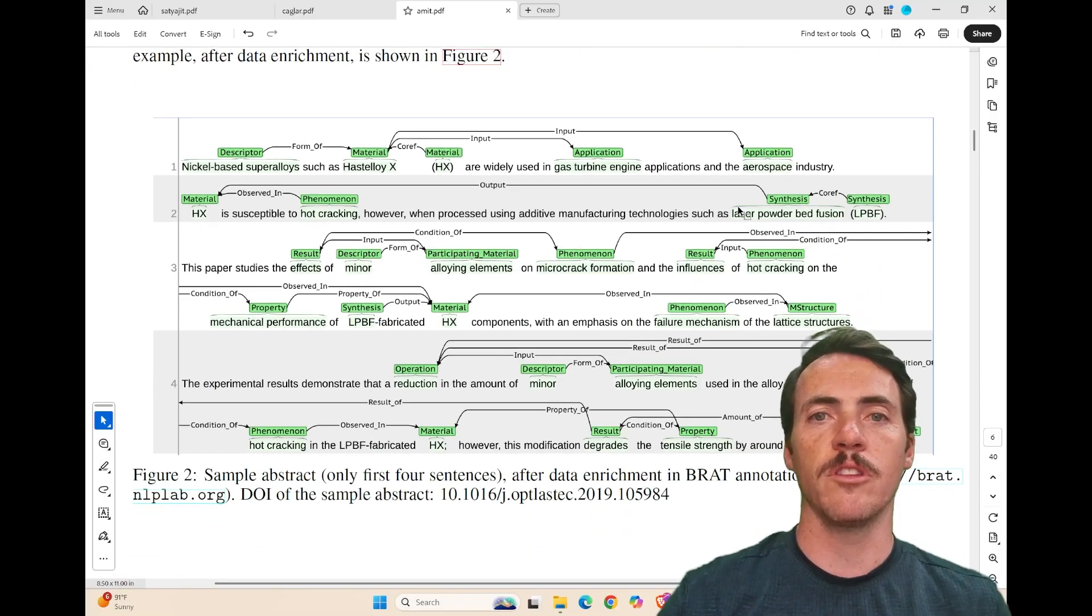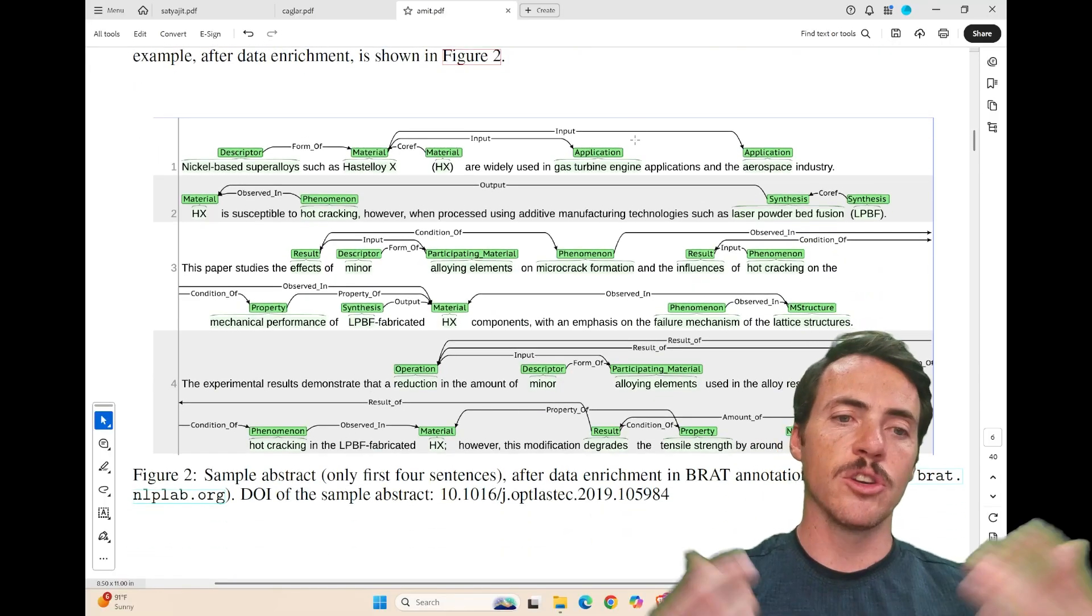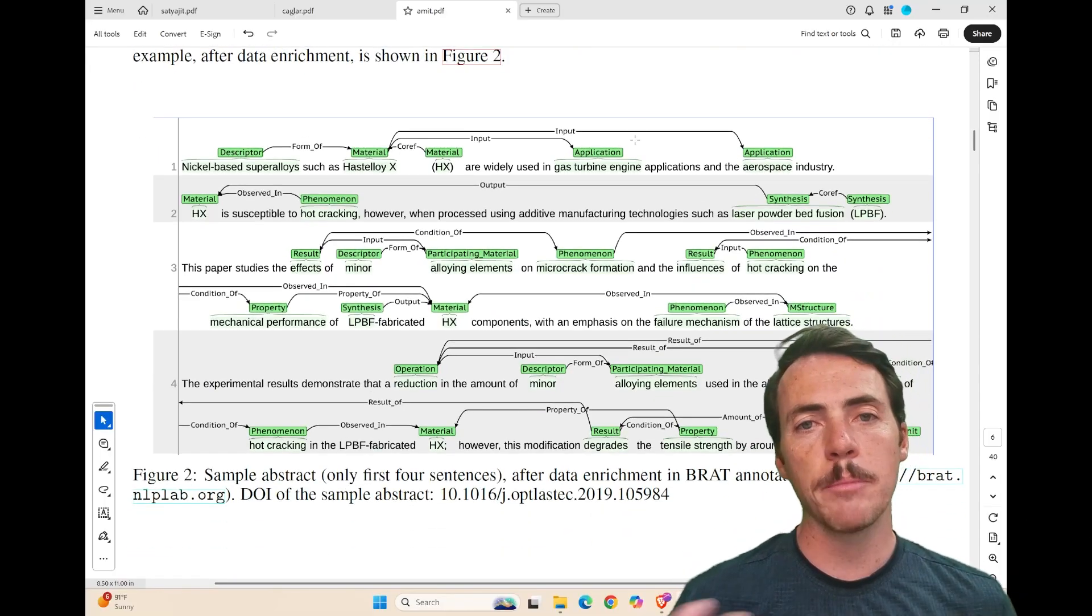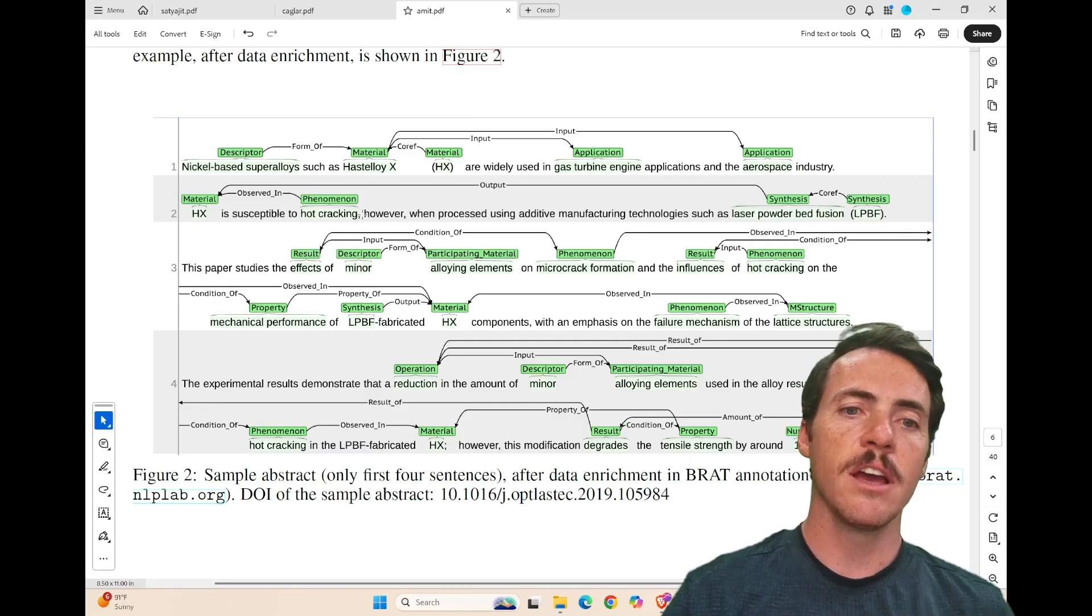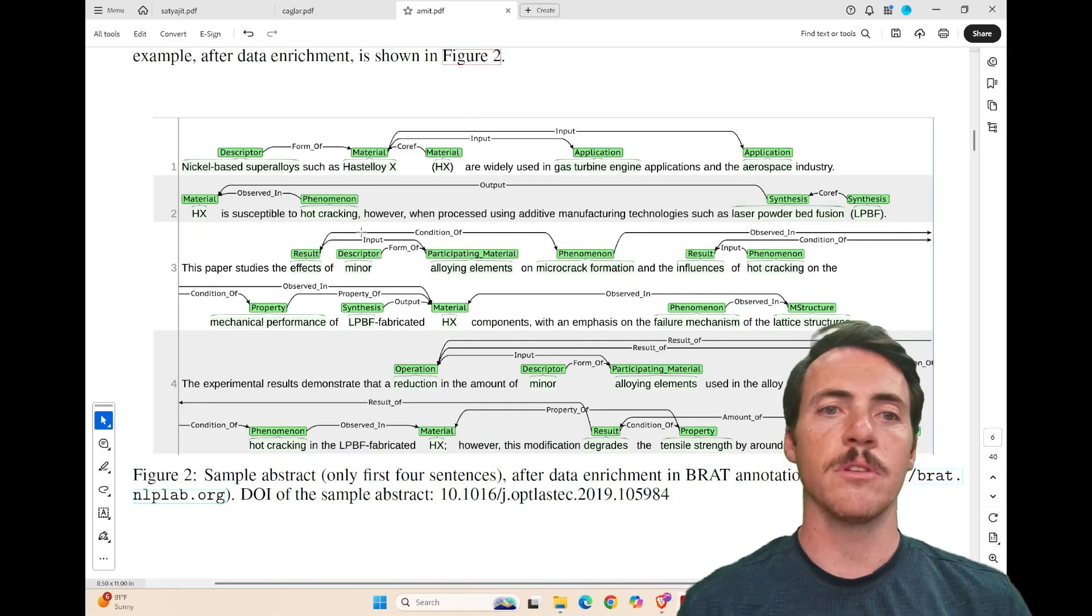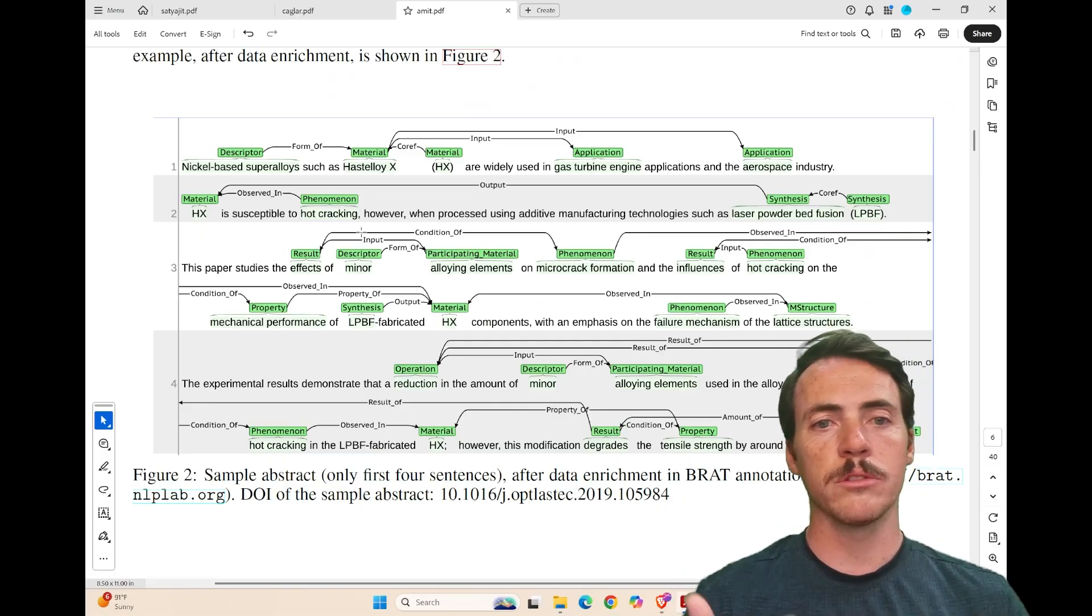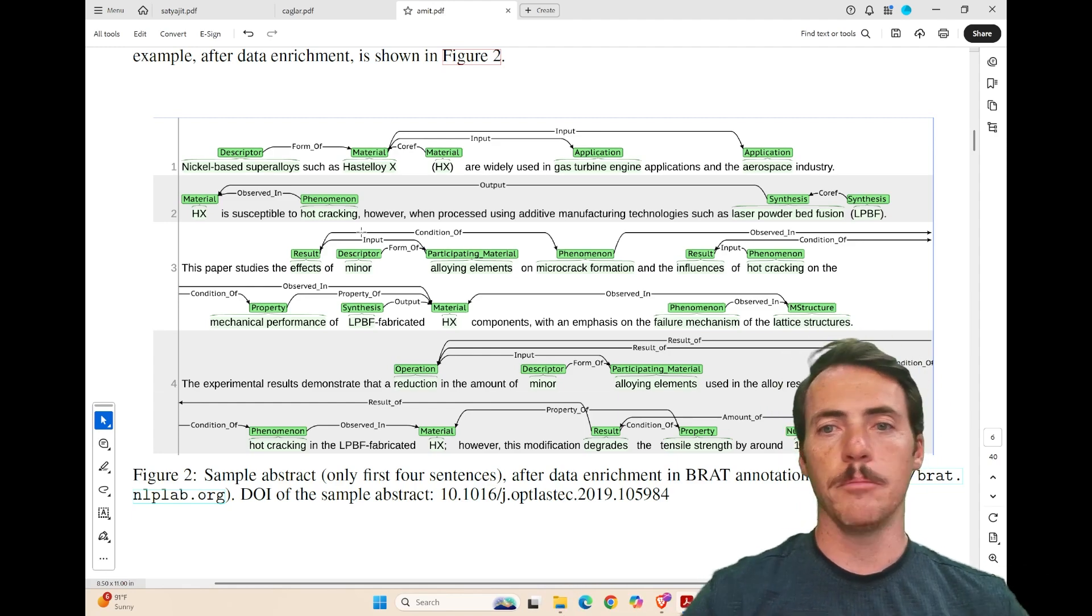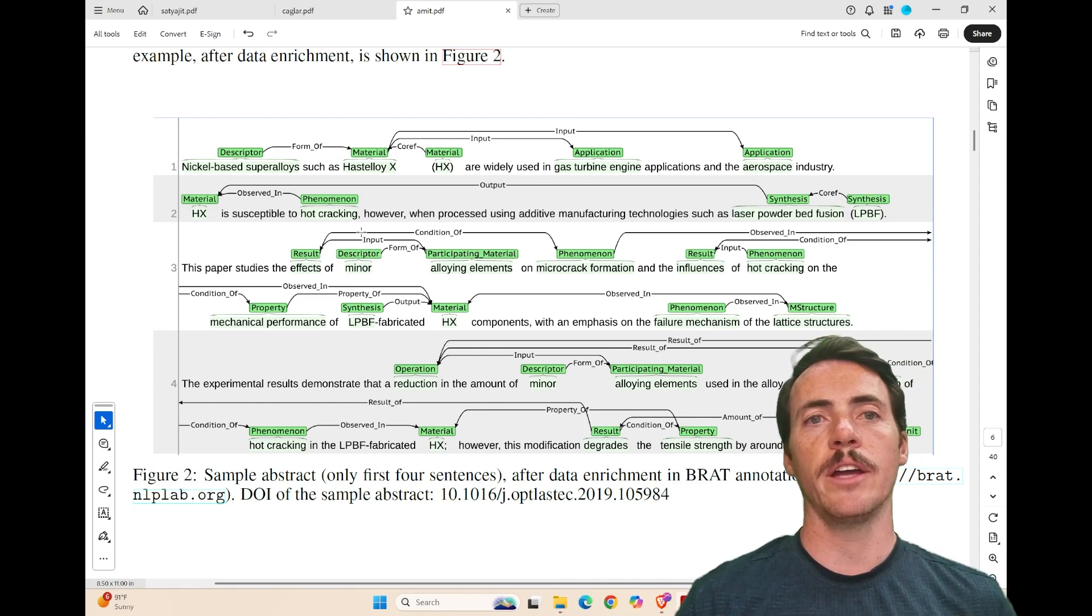And here's an example using the BRAT annotation tool. This is showing you the first couple of sentences from some abstract, and you see that there are named entities. There are relationships, whether something is a descriptor, a result, property, synthesis, participating material, co-ref. All these different things are sort of outlined in this schema.